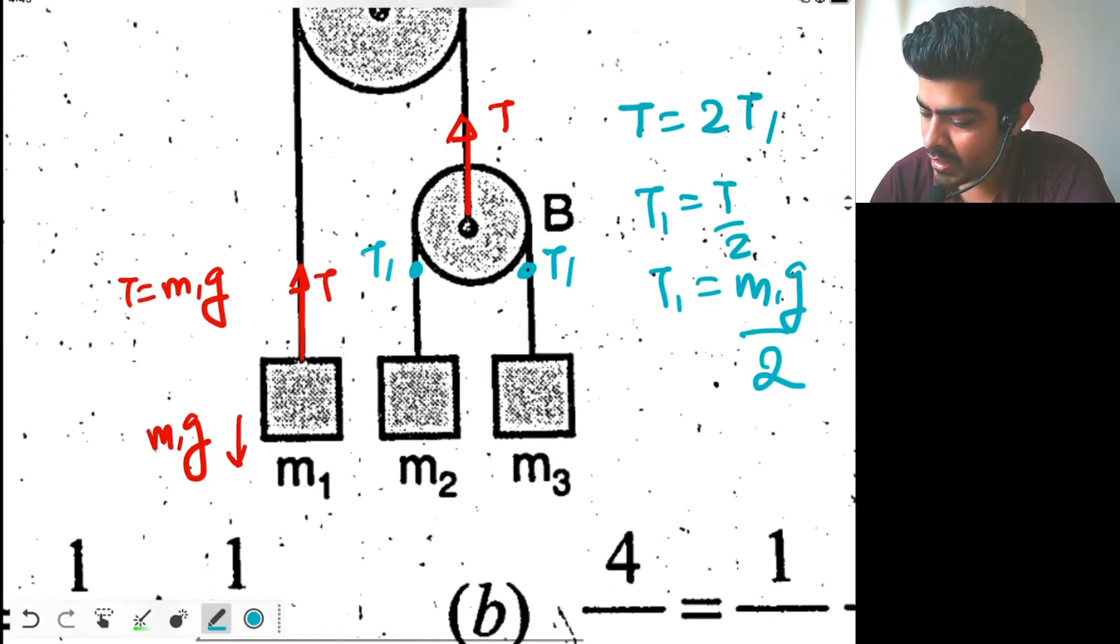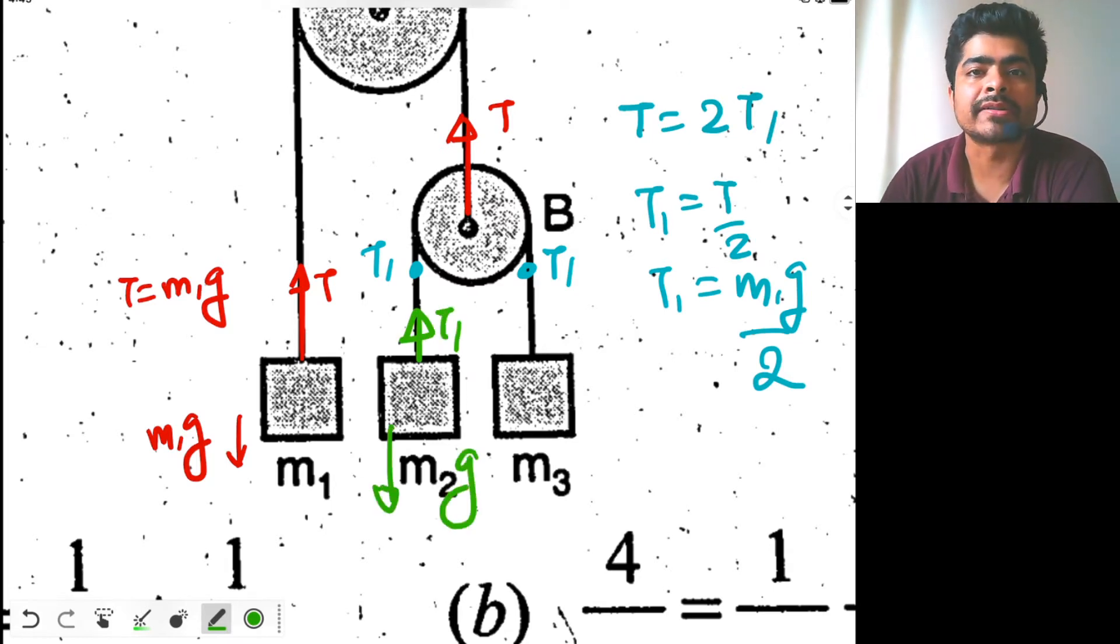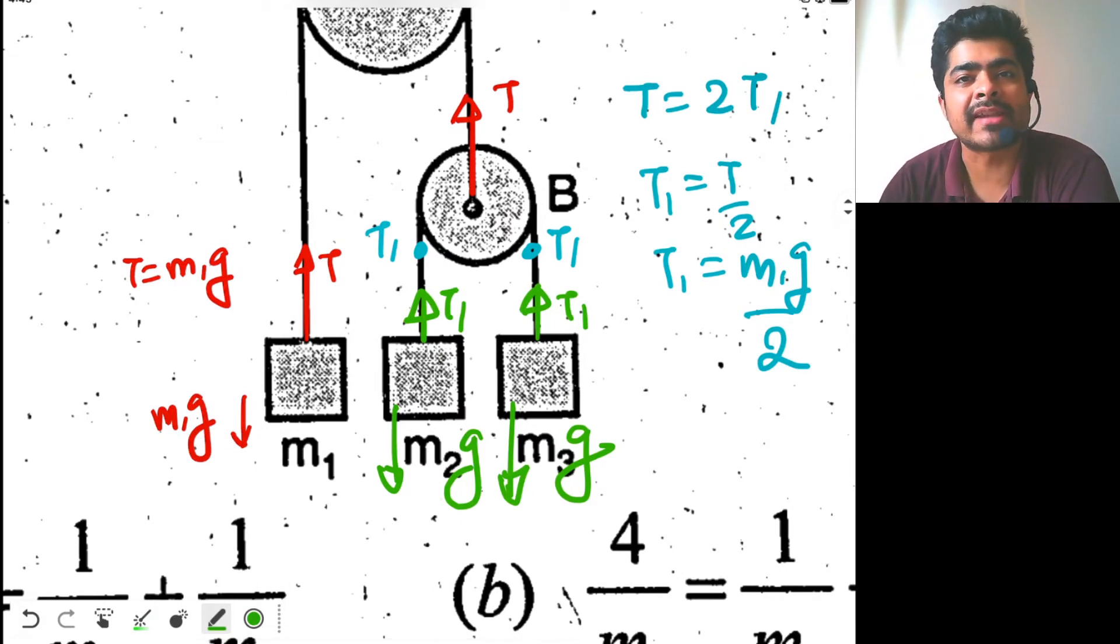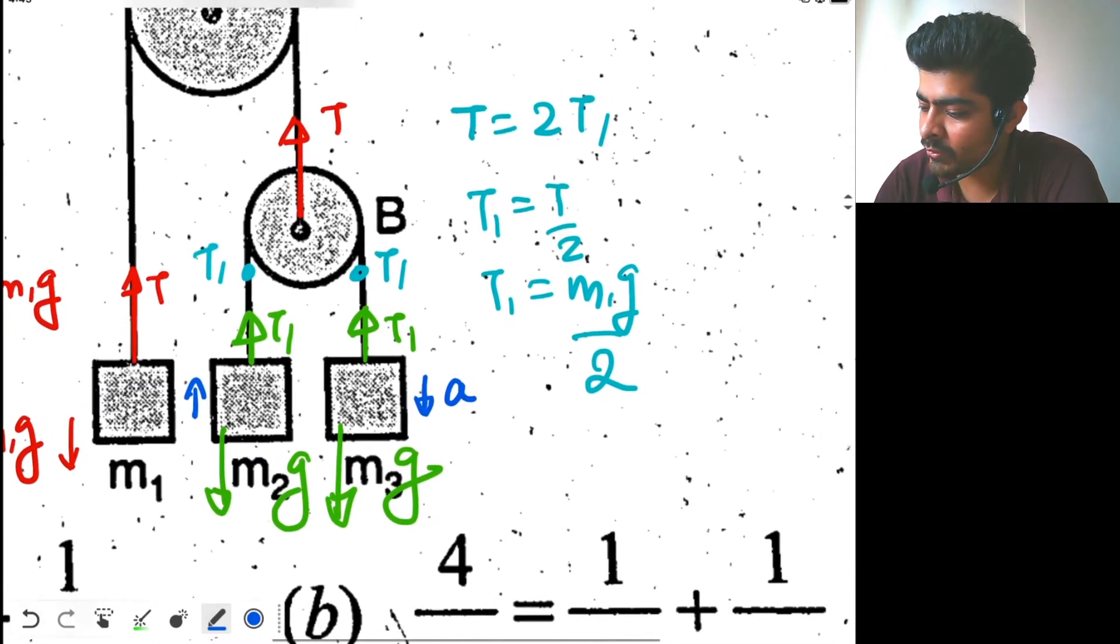Now look at the blocks. For this block, T1 is acting upwards, m2g is acting downwards. For the second block also, T1 is acting upwards and m3g is acting downwards. Now we don't know m2 or m3 which one is heavier, but we do know one thing - they will have same acceleration but in opposite direction. So suppose m3 goes down with acceleration a, so m2 will go up with same acceleration a.